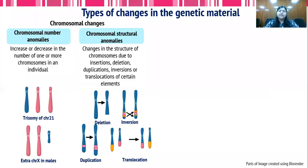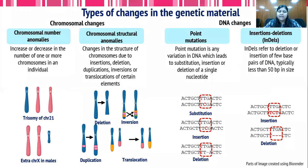What are the types of genetic changes that could happen in genetic material? There could be chromosomal changes or changes at the DNA level. In case of chromosomal changes, there could be changes in the number of the chromosome — either a decrease or increase — or there could be structural changes in the chromosome.